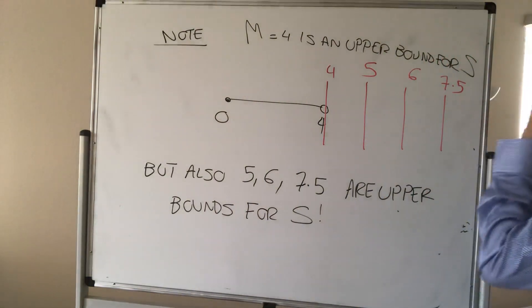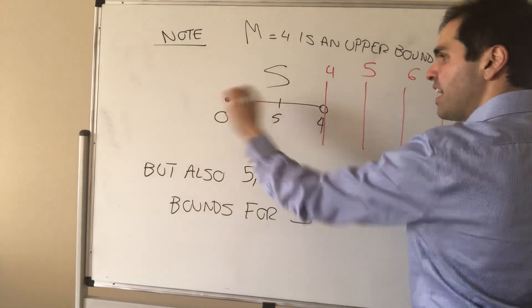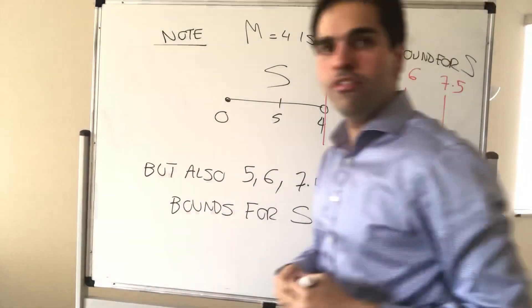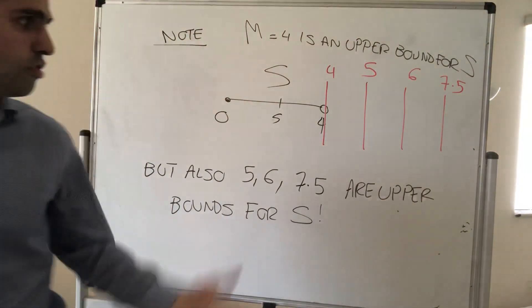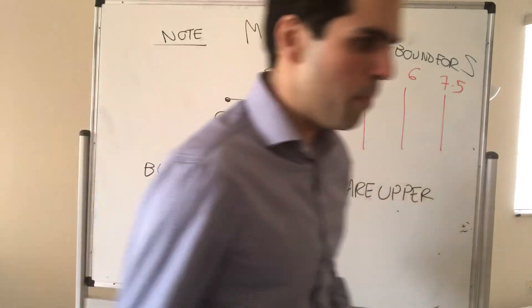Because why is that true? It is still true, strictly speaking, that if you take any element in S, it's less than or equal to 7.5. In other words, if you take any number greater or equal to four, it's still an upper bound.